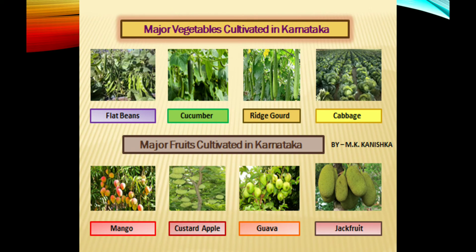Major vegetables cultivated in Karnataka include flat beans, cucumber, ridge gourd, and cabbage. Major fruits cultivated in Karnataka include mango, custard apple, guava, and jackfruit.